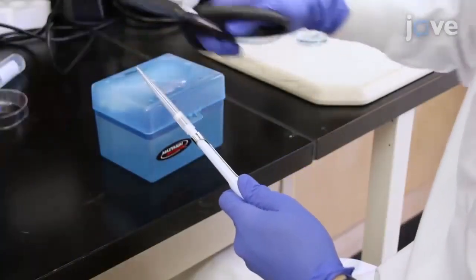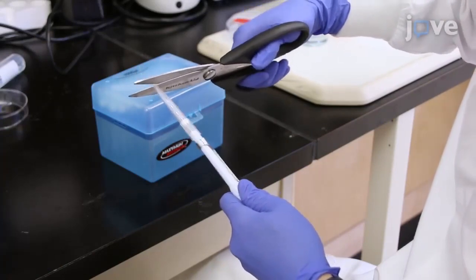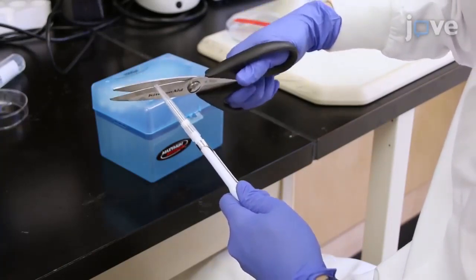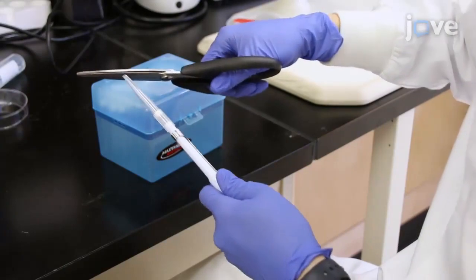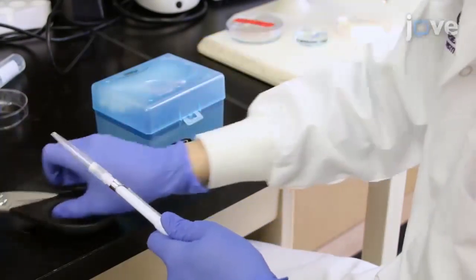Prepare a P1000 pipette tip for accommodating a 3 DPF larvae with minimal stress by cutting off the end of the pipette tip to a diameter of 2 mm.